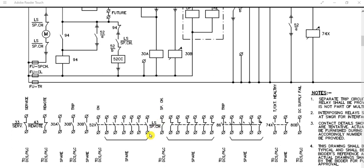This is the spring charge limit switch contact — the motor spring charge limit switch contact — and it is also going to DCS. Next, 86 is the main lockout relay. This trip signal is going to DCS or PLC, and the remaining contacts are spare.